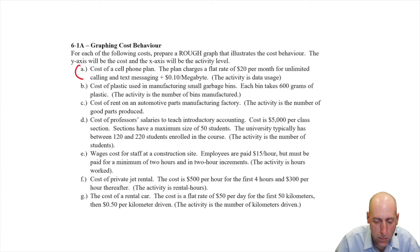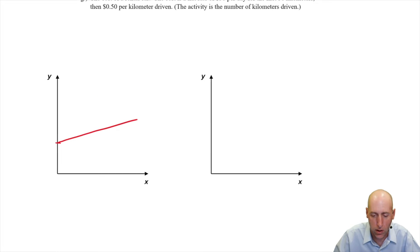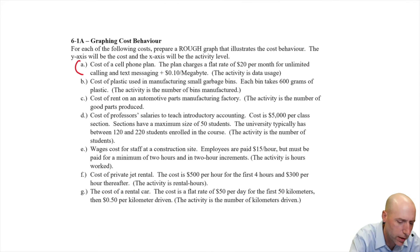B, cost of plastic used in manufacturing small garbage bins. Each bin takes 600 grams of plastic. So garbage bins require plastic. If I make zero garbage bins, I have zero plastic cost. If I have one garbage bin, let's just say 600 grams costs a dollar. One bin, $1 of plastic. Two bins, $2 of plastic. Three bins, $3 of plastic. Four bins. This is a pure variable cost. One bin, $1. Two bins, $2, et cetera. It's just a straight line going up from the axis.